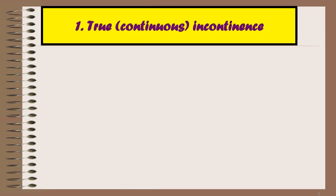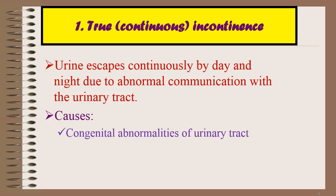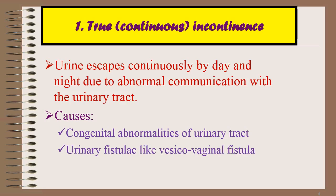True incontinence is also called continuous incontinence, in which urine escapes continuously by day and night due to abnormal communication with the urinary tract. The causes include congenital abnormalities of the urinary tract and urinary fistulae, like vesicovaginal fistulae.